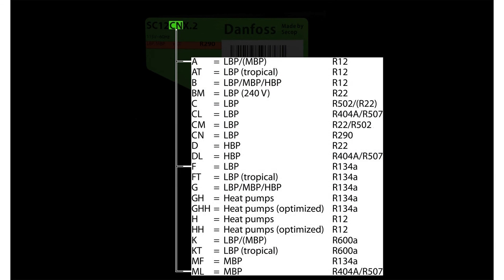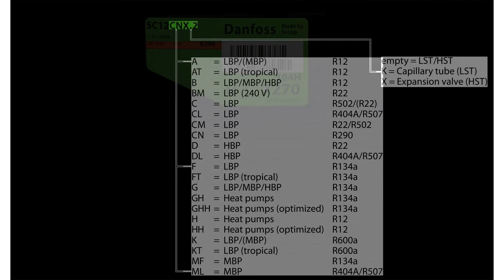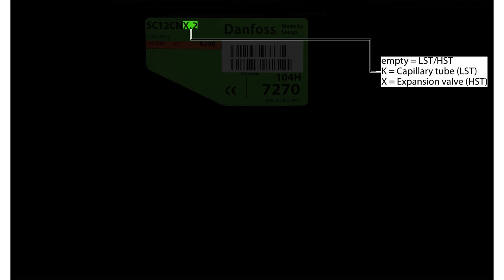The next digit in the model number signifies the application range and refrigerant for which the compressor is rated. The following digit in the nomenclature signifies the starting characteristics of the compressor.